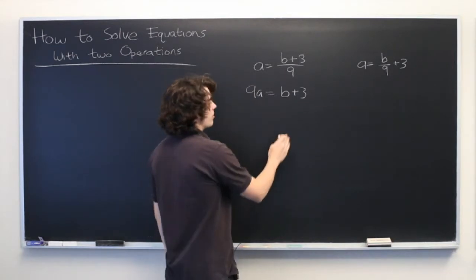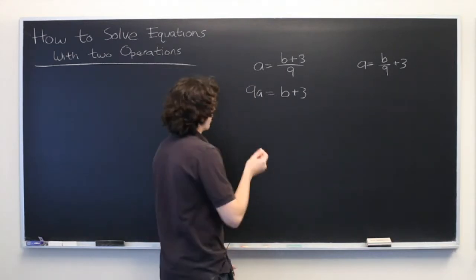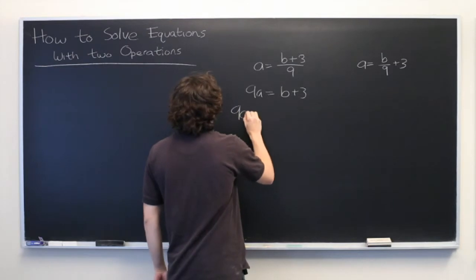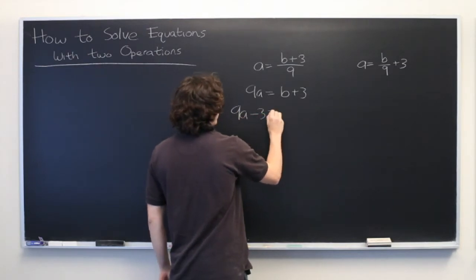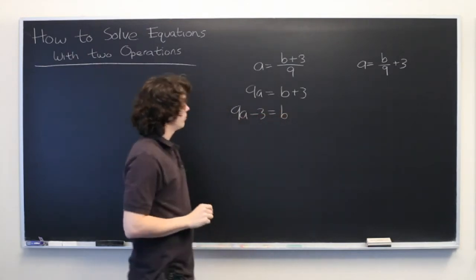From here, we simply subtract 3 from both sides and then we're done. Easy enough.